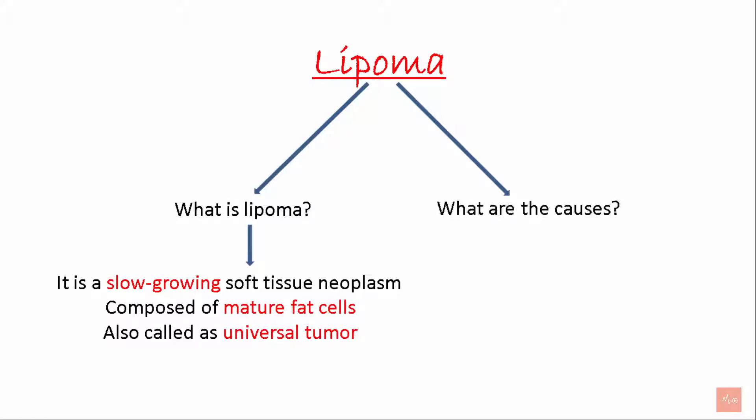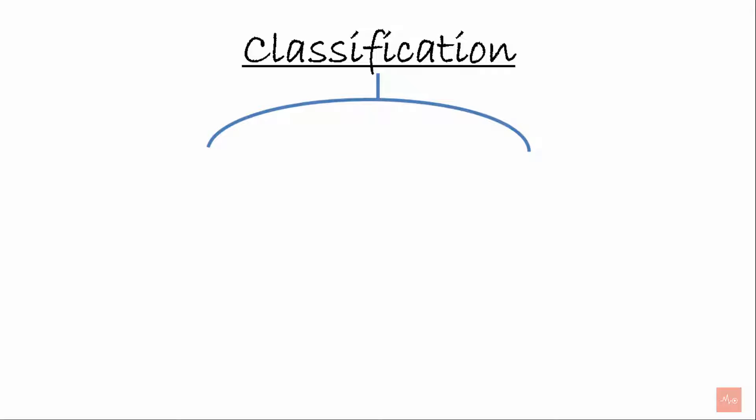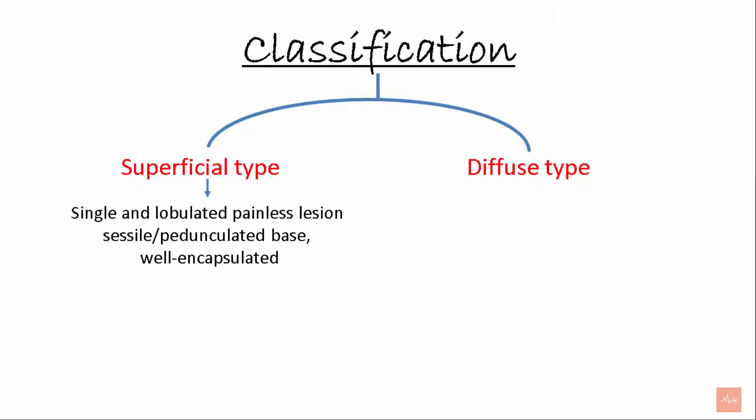What are the causes? Idiopathic and genetic. Moving on to the classification — it is divided into superficial type and diffuse type. The superficial type is a single and lobulated, painless lesion. It can have a sessile or pedunculated base and it is well encapsulated.